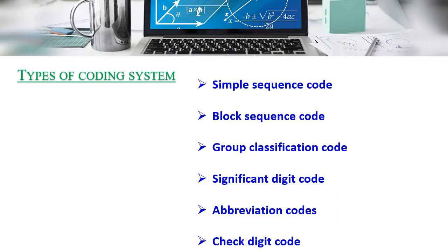Types of coding systems include: symbol sequence code, block sequence code, group classification code, significant digit code, abbreviation code, and check digit code.